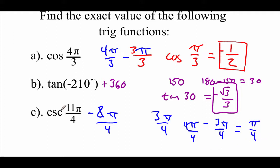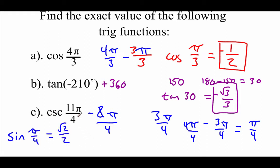As far as the cosecant goes, I'm actually going to deal with this as a sine first, because sine is just the reciprocal of cosecant. So the sine of π over 4 is √2 over 2, but in order to do this cosecant, we're going to have to flip this fraction over.